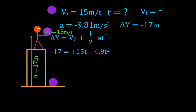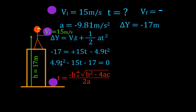We can see we have the makings of a quadratic equation: a t-squared term, a t term, and a constant. Rearranging — moving all terms to one side — we get: 4.9t² minus 15t minus 17 equals zero. Now we apply the quadratic formula: t equals negative b plus or minus the square root of b squared minus 4ac, all divided by 2a.